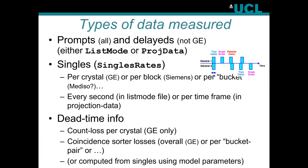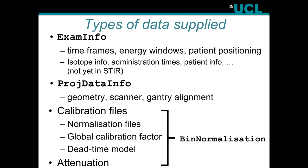Dead time information is also needed. Some manufacturers measure dead time per crystal, others only per block or bucket. It can be a global number or per bucket-pair. Many manufacturers measure it by acquiring a phantom at different count rates as activity decays, fitting model parameters. The input data typically used for dead time modeling are the singles, since most dead time occurs at the single-detector level.